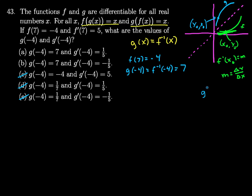g prime of y naught, that is going to reflect that over the line y equals x. So it should be delta x over delta y.